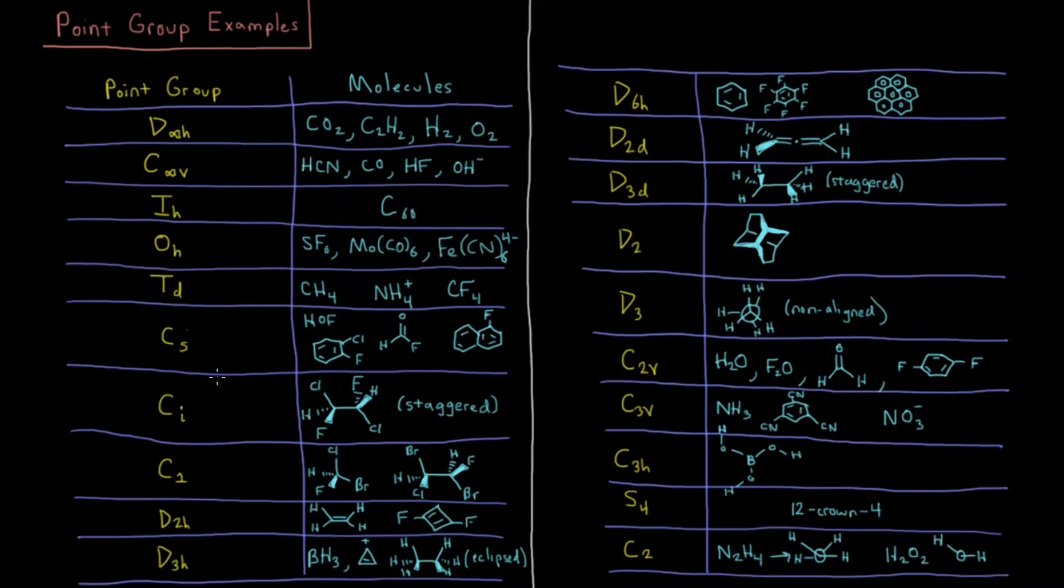Then starting at the very simple cyclic groups, CS, CI, C1. We have HOF, fluorochlorobenzene 1,2-substituted, HFCO, or 1-fluoronaphthalene. These things only have a mirror plane.